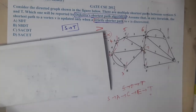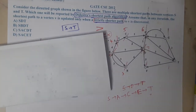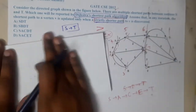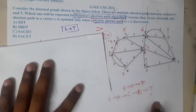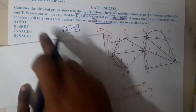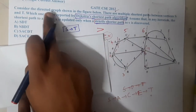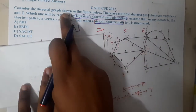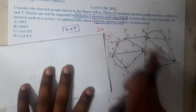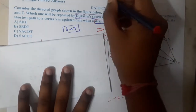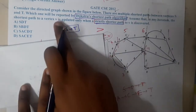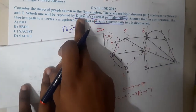Hello guys, we are back with our next lecture. This question belongs to GATE CSE 2012. The question says: consider the directed graph shown in the figure below. There are multiple shortest paths from vertex s to t, and that is our goal.